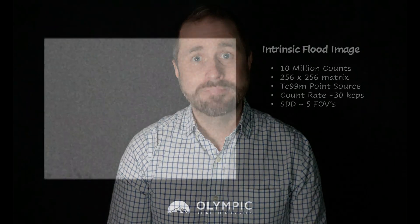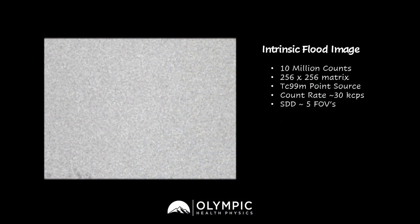Your job is going to be to try to figure out what the artifact is on the image. We'll give you a few seconds here to take a look at the image and see if you can figure out what's going on. Here we have an intrinsic flood image. This is done on a dual-headed camera, but we're only going to be looking at detector two. I want you to look at the image and see if you can find an artifact.